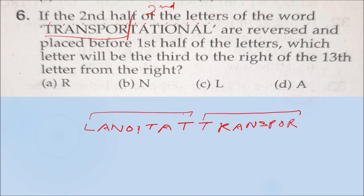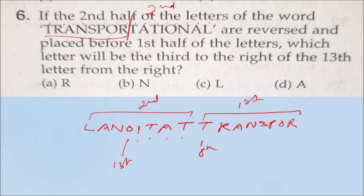Now the question asks: which letter will be third to the right of the 13th letter from the right? We count from the right — the 8th position is the boundary, then 9, 10, 11, 12, and the 13th letter from the right is found. From that 13th letter, moving three positions to the right gives us the third letter, which is A. So the answer is option D.